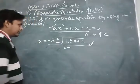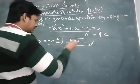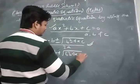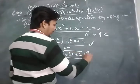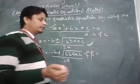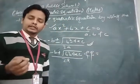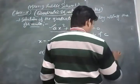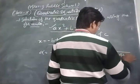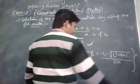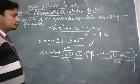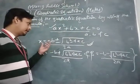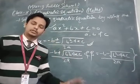The plus-or-minus sign indicates that there are two roots of the quadratic equation. The first root alpha is: (-b + √(b²-4ac)) / 2a. The second root beta is: (-b - √(b²-4ac)) / 2a. Combined, we write x = (-b ± √(b²-4ac)) / 2a.